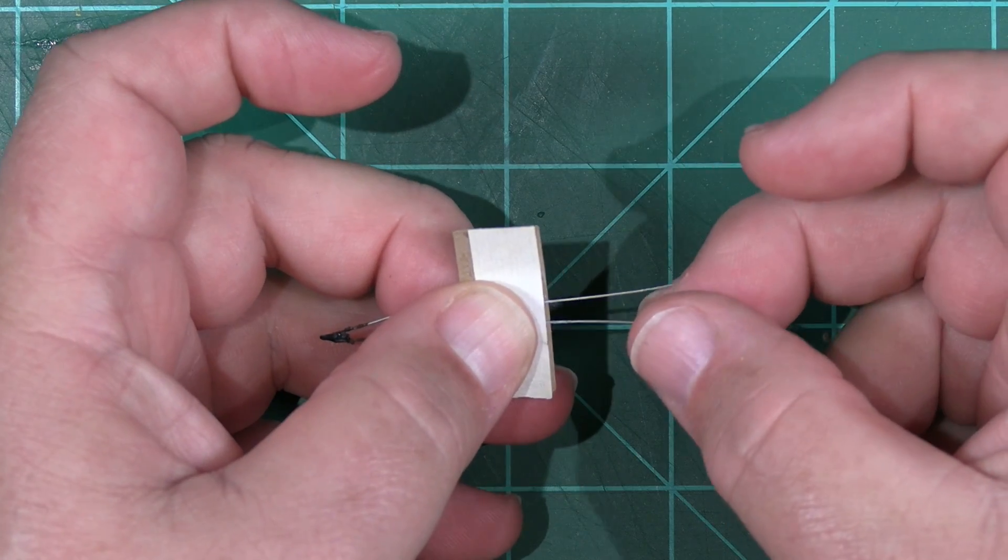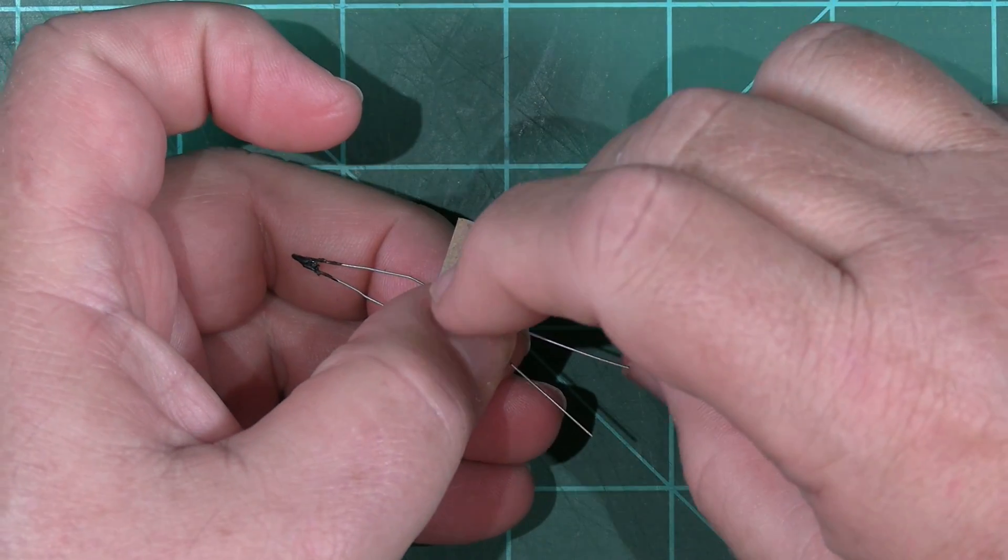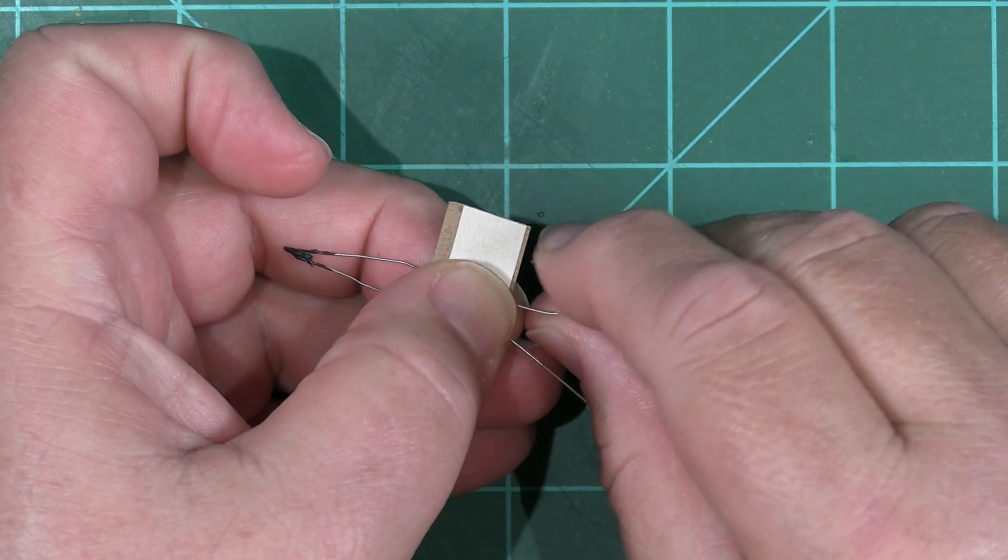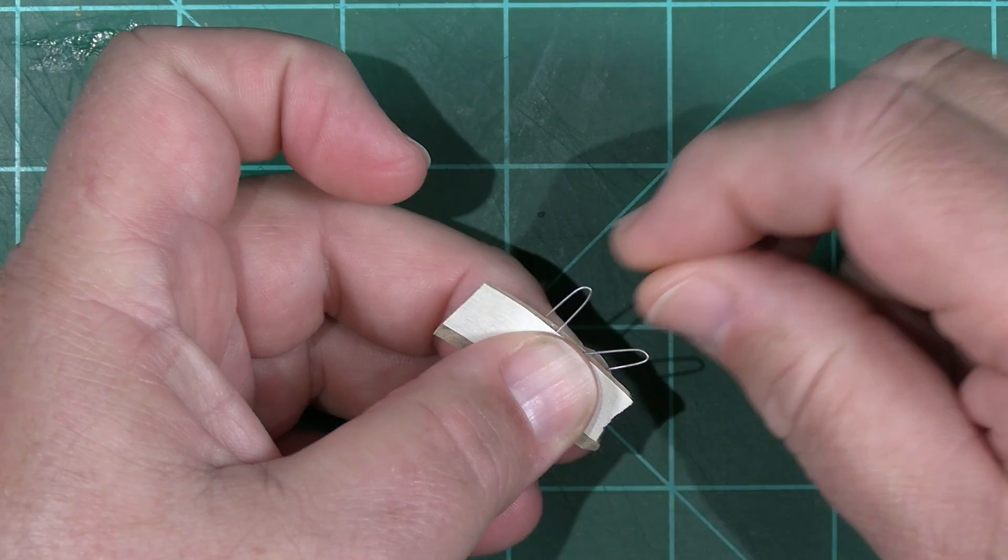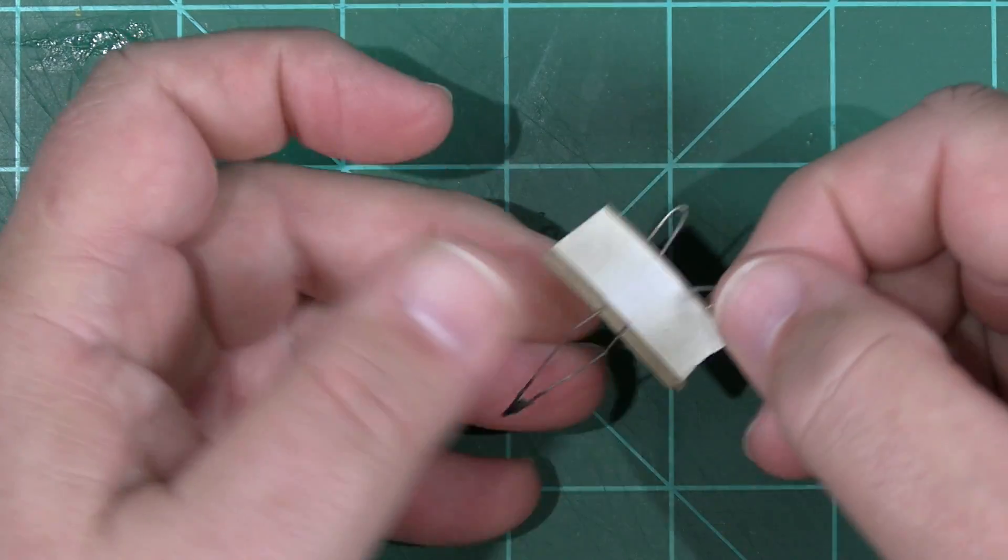Next, we're going to bend the attachment ends of the igniter into a simple hook shape, and then we're going to spread them out a little bit. This does a couple of things.